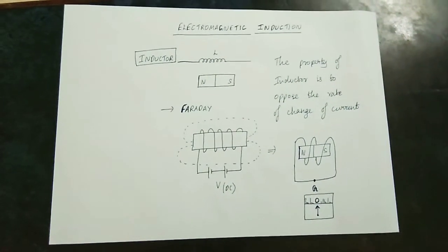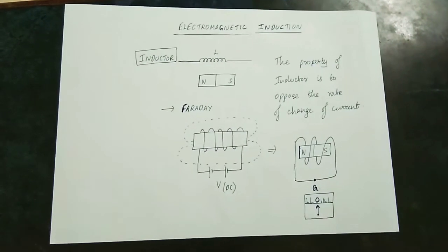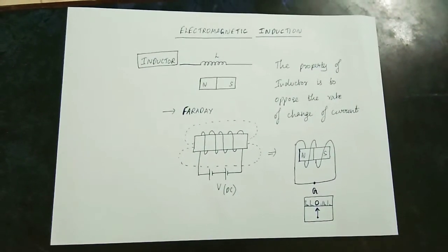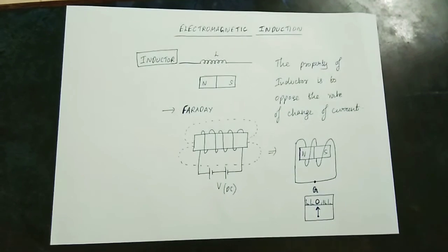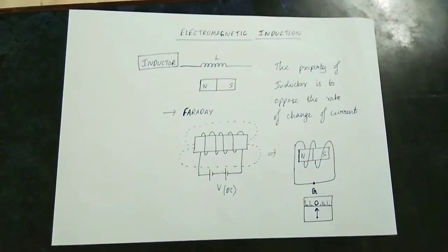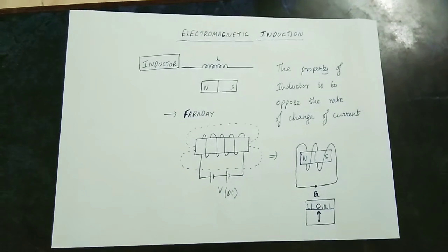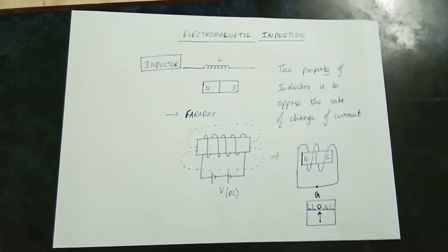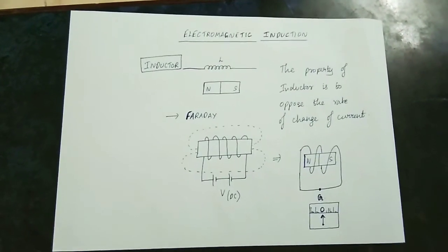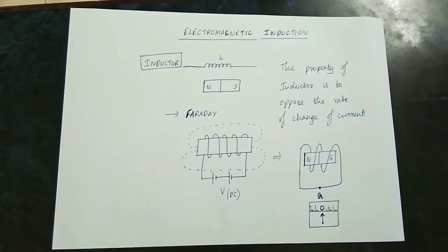Whenever a magnet is placed in a coil, or whenever a magnet's position is changed inside a coil, an induced current is produced. Later on, laws were proposed that are called Faraday's Law of Electromagnetic Induction.